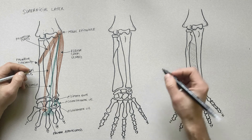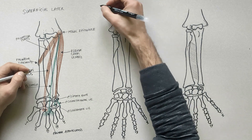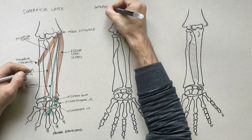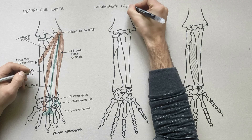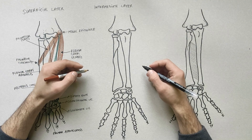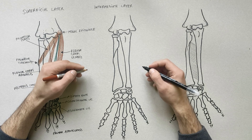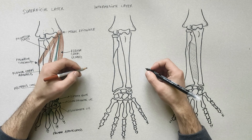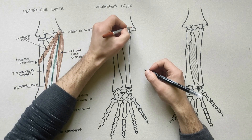On the next diagram, we will indicate the intermediate layer of the anterior compartment of the forearm. This layer contains only one muscle, the flexor digitorum superficialis.